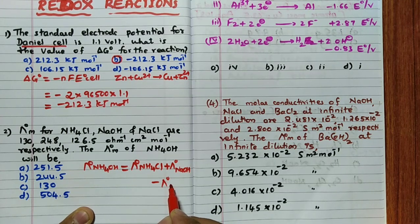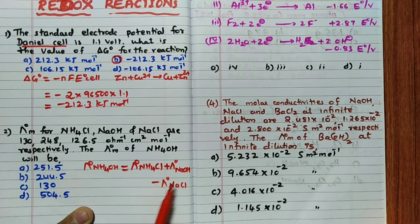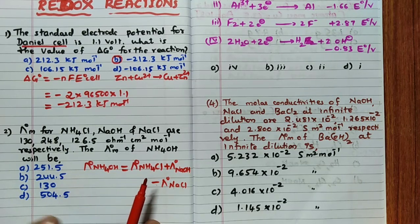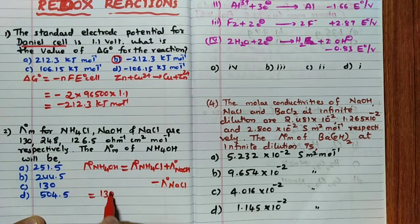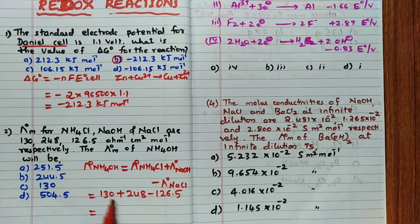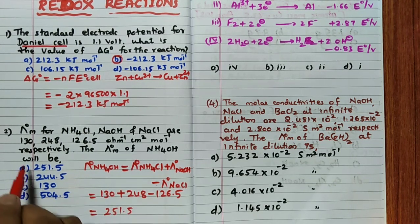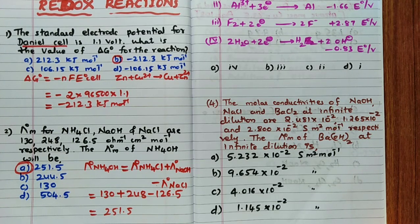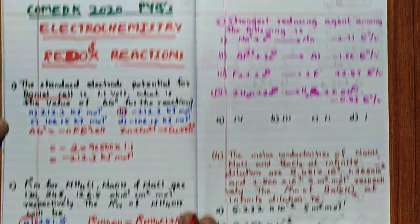When we apply this: +Cl⁻ and -Cl⁻ cancel, +Na⁺ and -Na⁺ cancel, leaving NH4OH. Now calculate: 130 (NH4Cl) + 248 (NaOH) - 126.5 (NaCl) = 378 - 126.5 = 251.5 S·cm²/mol. So option A, 251.5, is the correct answer.